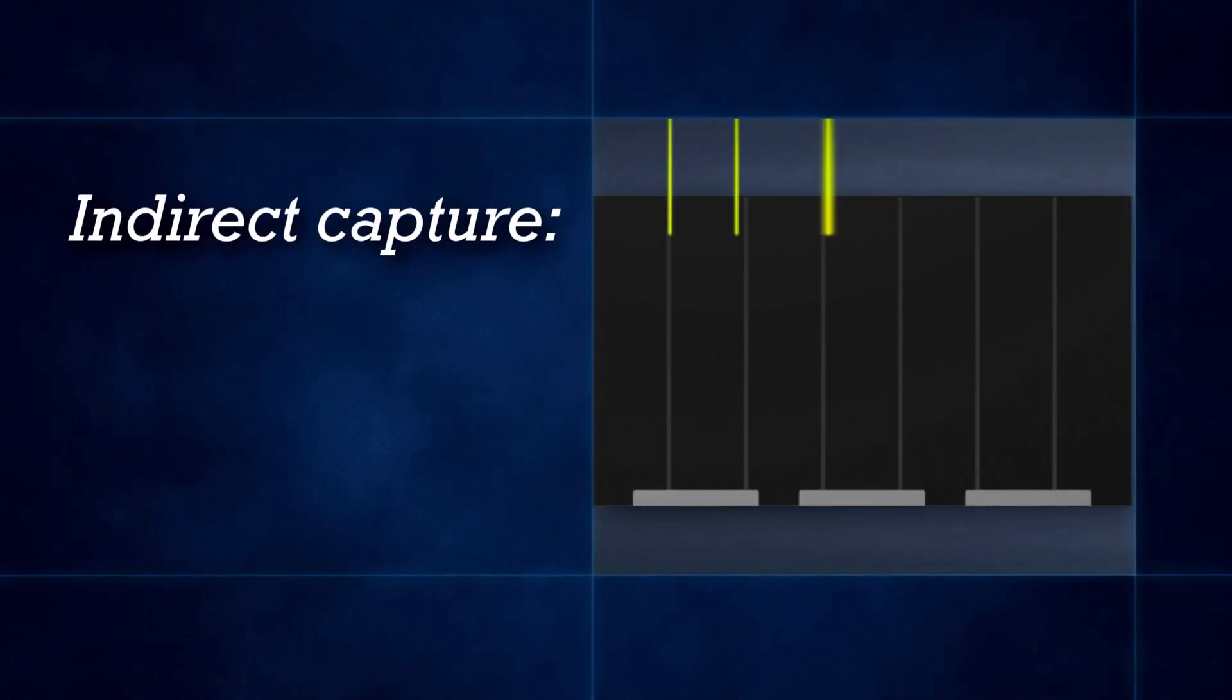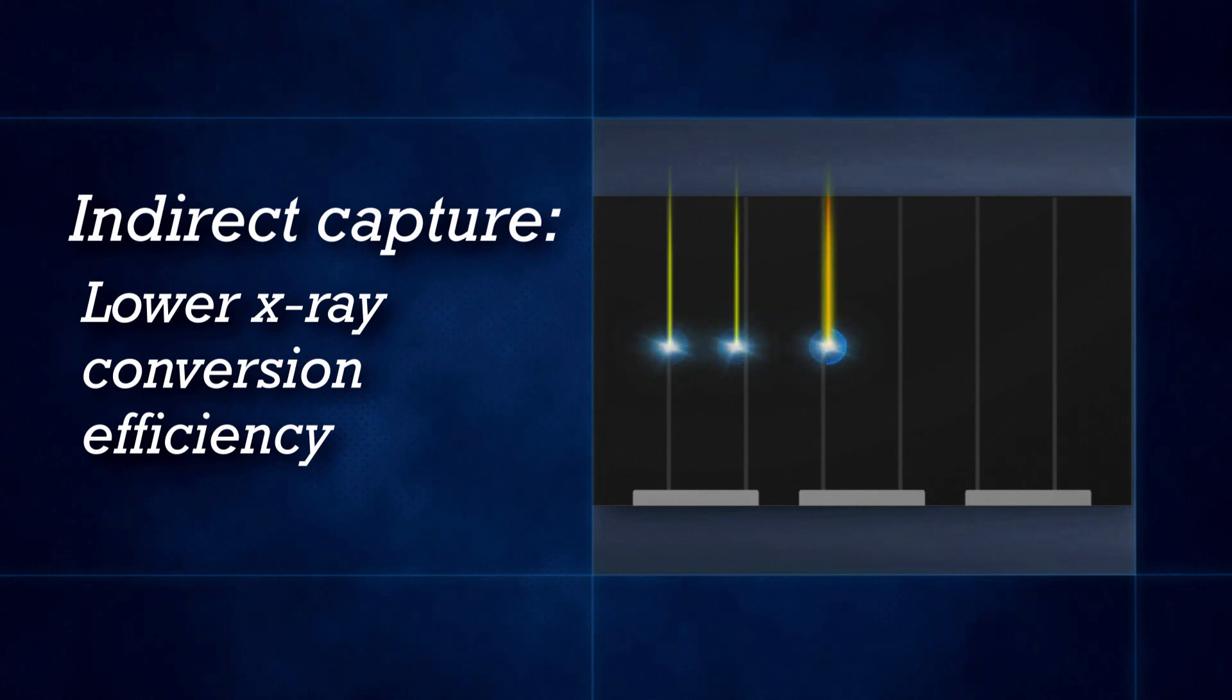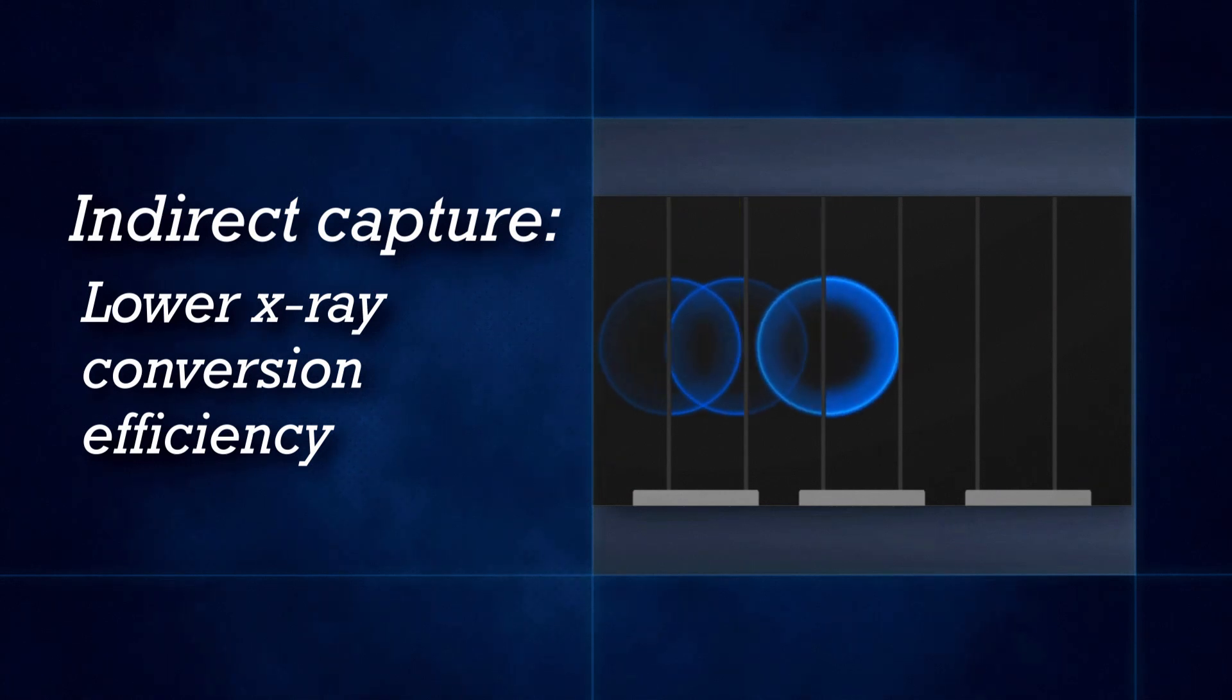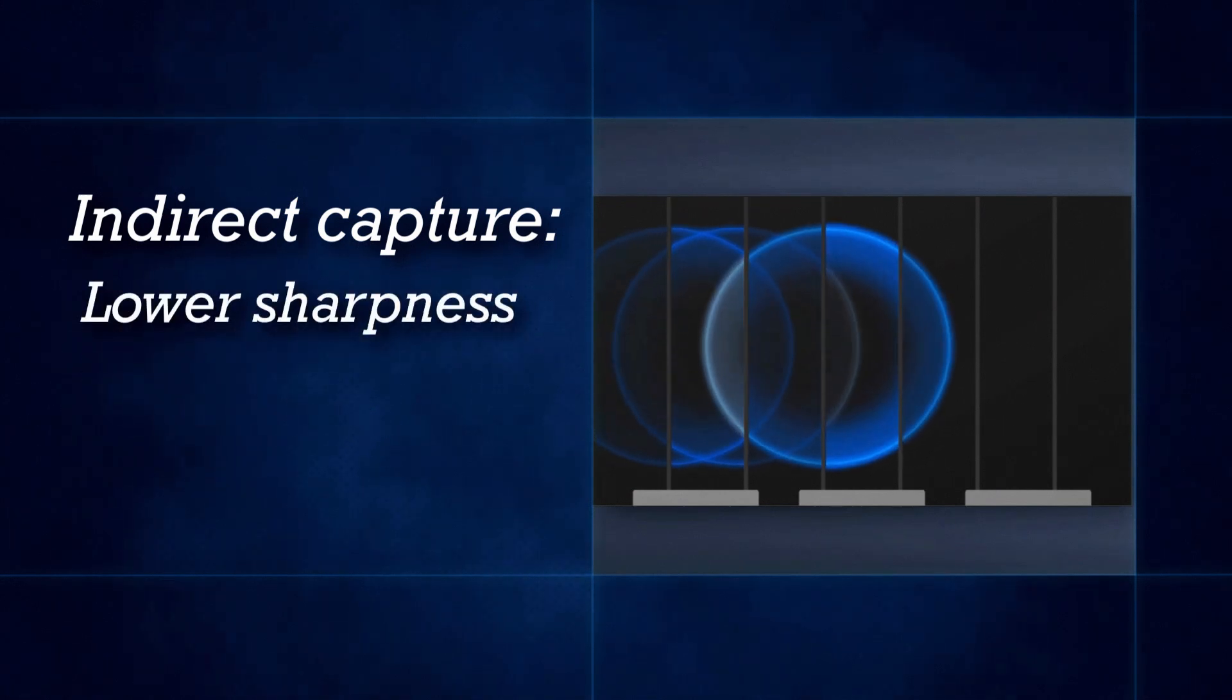First, Fujifilm looked carefully at the challenges of typical technologies. Indirect capture methods exhibit lower X-ray conversion efficiency, and diffusion leads to lower image sharpness.